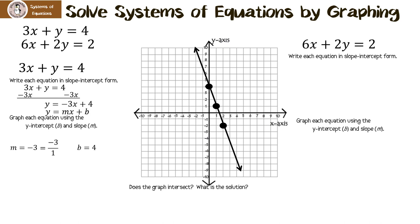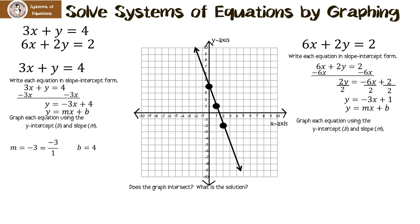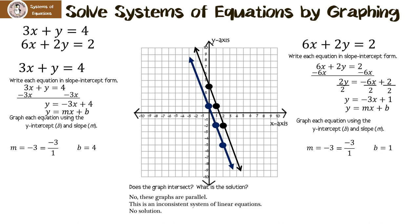The second equation is not in slope-intercept form either. Subtract 6x from both sides, then divide everything by 2, which gives y equals negative 3x plus 1. The slope is also negative 3, but the y-intercept is 1. Graph the y-intercept at 1, then go down 3 and over 1, down 3 and over 1. Do the graphs intersect? No — these graphs are parallel. This is an inconsistent system of linear equations, so there's no solution.